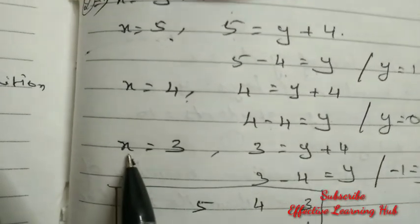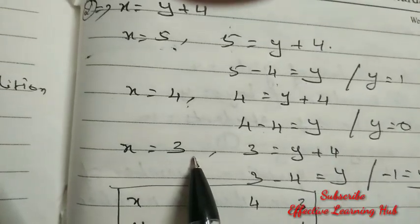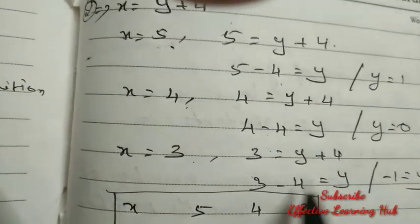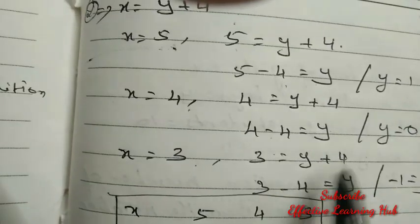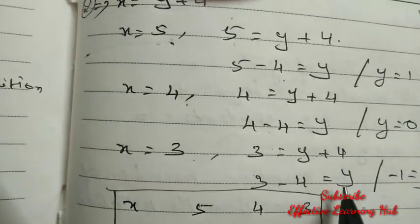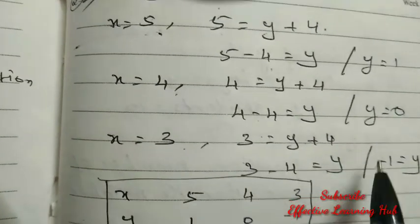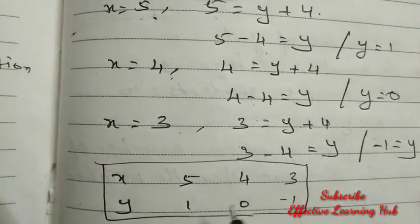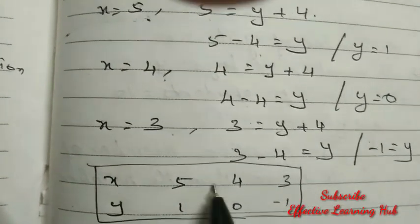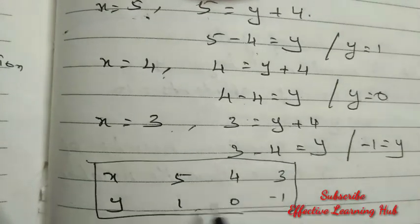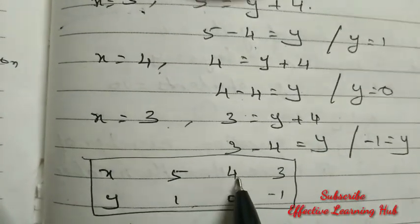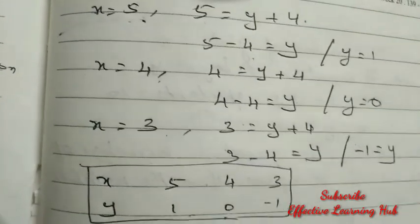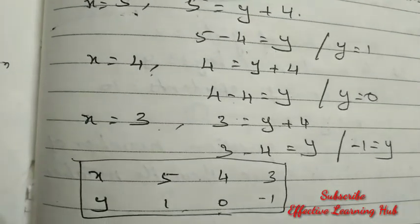For x equal to 3: 3 equal to y plus 4, so 3 minus 4 equal to minus 1, y equal to minus 1. The points are: x equal to 5, y equal to 1; x equal to 4, y equal to 0; x equal to 3, y equal to minus 1.